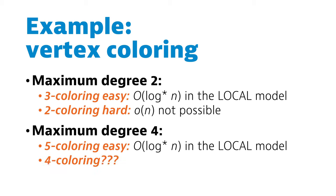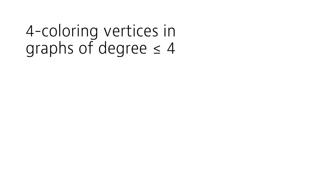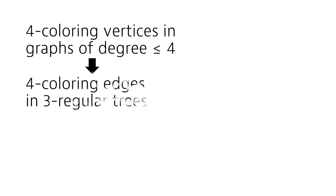But is this the best that we can do? Could we also find a 4-coloring fast? Well, if we could find a 4-coloring of vertices in graphs of maximum degree 4, we could also find a 4-coloring of edges in 3-regular trees.